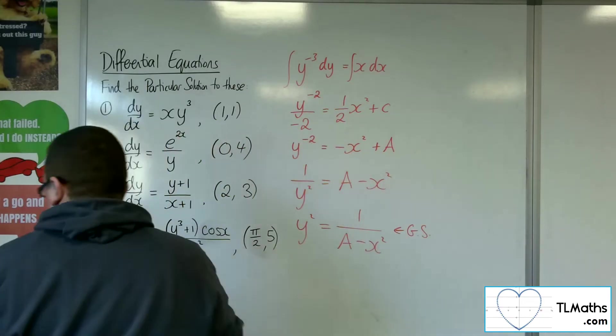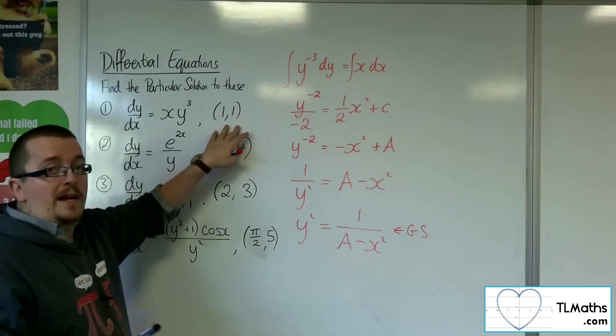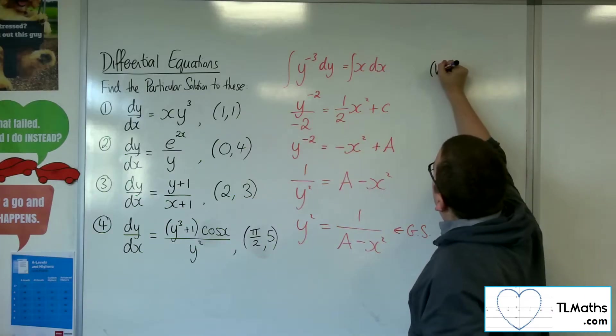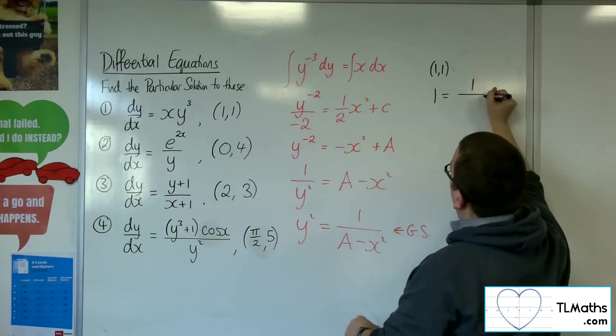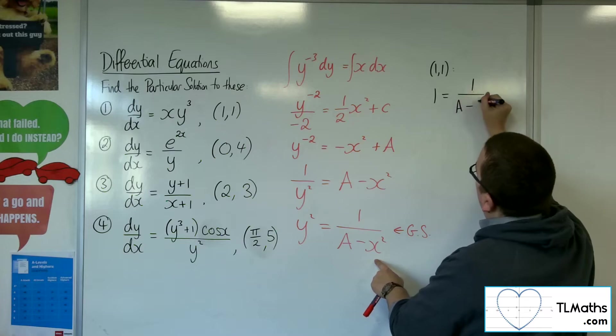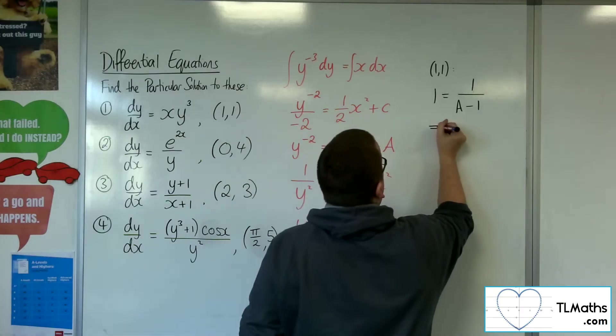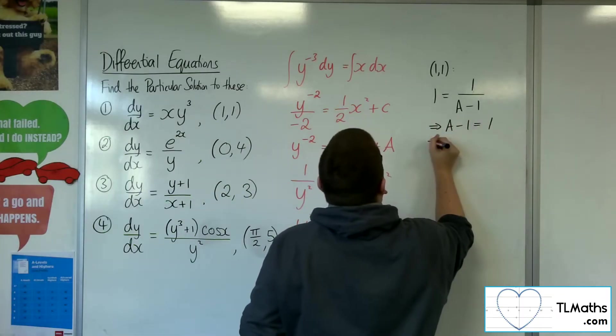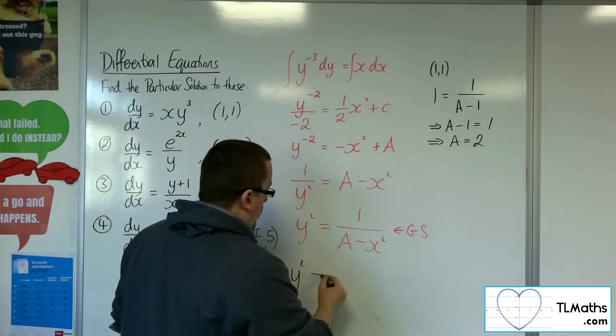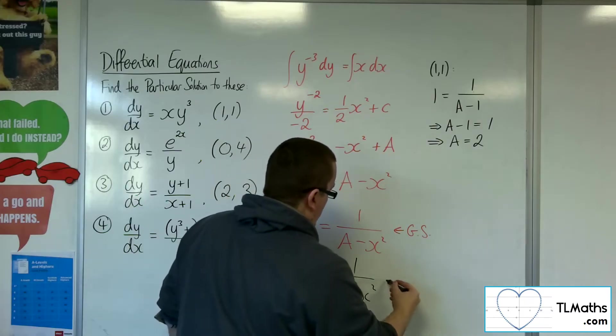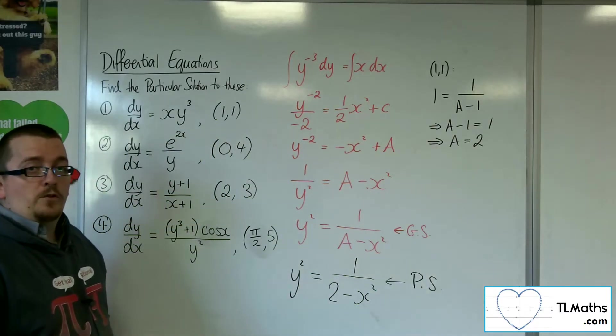And now I want to find the particular solution. So that's substituting in the coordinates 1, 1 to work out the value of a. At 1, 1, we're going to get 1 squared equals 1 over a minus 1 squared. In other words, a minus 1 has to be 1, and so a would have to be 2. So the particular solution would be y squared equals 1 over 2 minus x squared. That's question number 1.